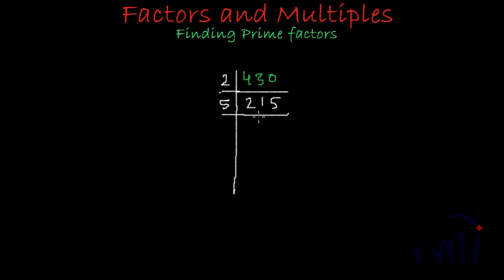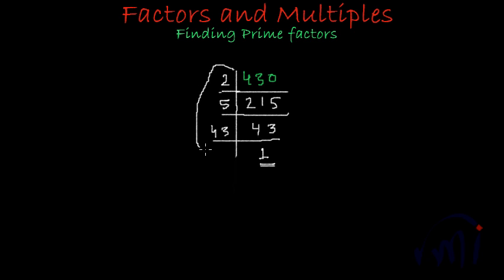So if I divide 215 by 5: 5 times 4 is 20, 5 times 3 is 15, giving us 43. And 43 is a prime number — it's divisible by either 1 or 43, so 43 times 1 is 43. Since 1 is not a prime number, the prime factors of 430 are 2, 5, and 43. So 430 can be written as 2 multiplied by 5 multiplied by 43.